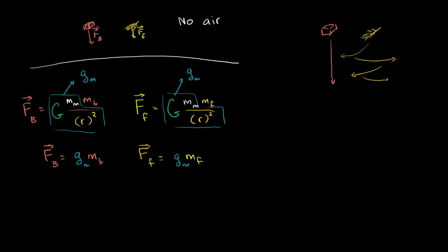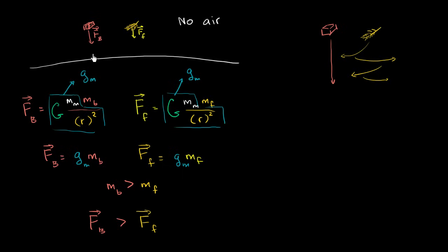Assuming the mass of the brick is greater than the mass of the feather — which is reasonable — the force of gravity on the brick will be greater than on the feather, since a greater mass times the same quantity yields a larger result. You might then say the brick will accelerate down more quickly. But remember: the brick also has greater mass, and the larger something's mass, the less acceleration it experiences for a given force. What really determines how quickly each object falls is their acceleration.